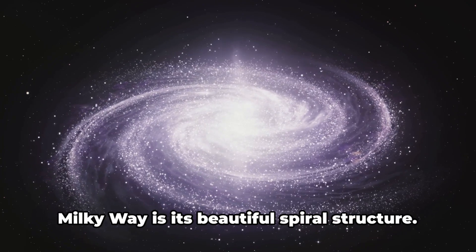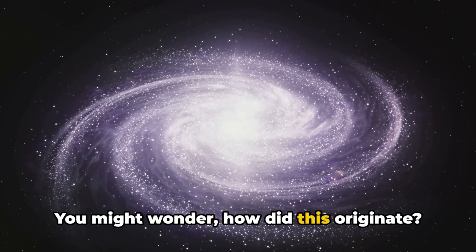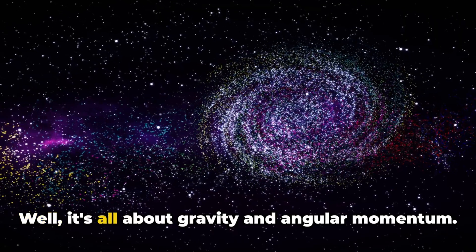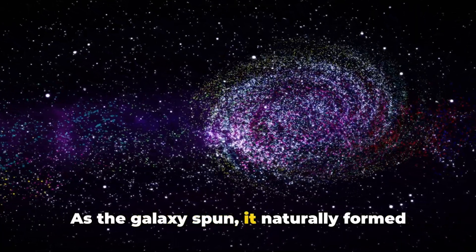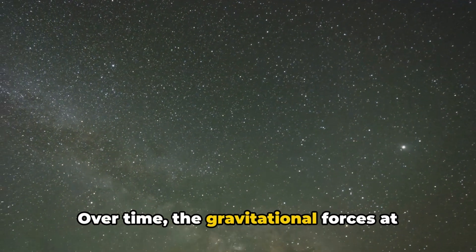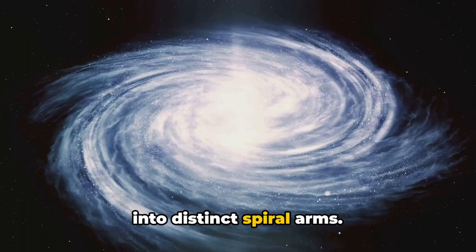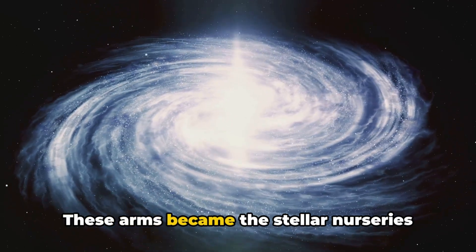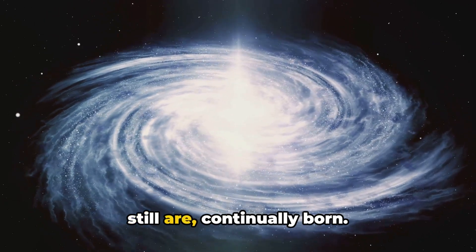One of the most striking features of the Milky Way is its beautiful spiral structure. You might wonder, how did this originate? Well, it's all about gravity and angular momentum. As the galaxy spun, it naturally formed into a flat, rotating disk. Over time, the gravitational forces at play caused the gas and dust to coalesce into distinct spiral arms. These arms became the stellar nurseries of the galaxy, where new stars were, and still are, continually born.